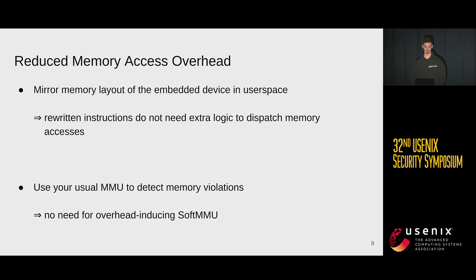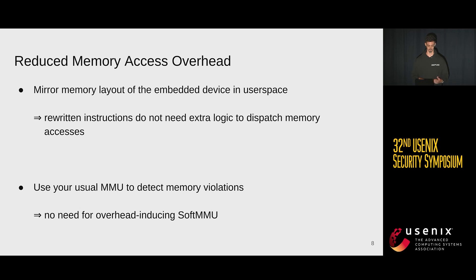The second thing is reduced memory access overhead. We are just mirroring the memory layout of the flat firmware image in Linux user space, starting the whole firmware as a Linux user space process on consumer hardware — we used Raspberry Pis and a Honeycomb developer workstation for that. We do not need any extra logic for memory accesses. Furthermore, we can use the MMU your consumer platform comes with, introducing a custom bump allocator with guard pages to catch out-of-bounds reads and writes, and relying on the hardware MMU instead of the overhead of a soft MMU.